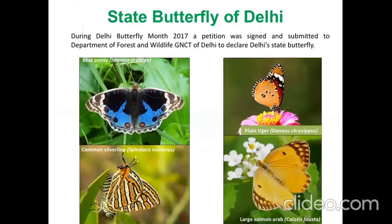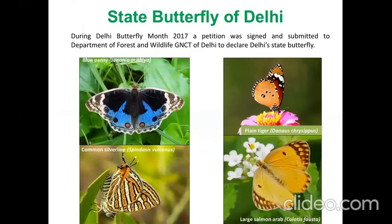In this whole program, we also initiated a petition to make a state butterfly of Delhi. I'm sad to say we haven't been successful yet — we have petitioned the Department of Forest and Wildlife, and they are quite willing, but we are stuck on reaching a consensus on which butterfly should be chosen. The four nominations are blue pansy, silver line, salmon arab, and plain tiger. I'm hoping to get this done by this year if we can reach a consensus and things go back to normal.